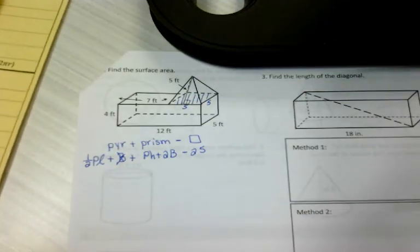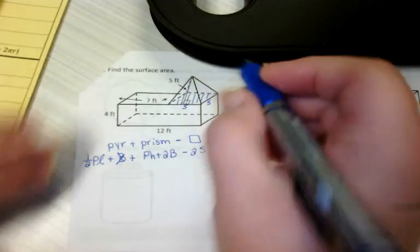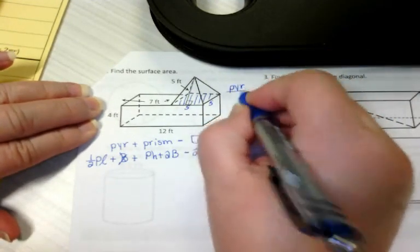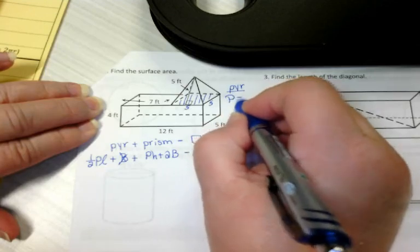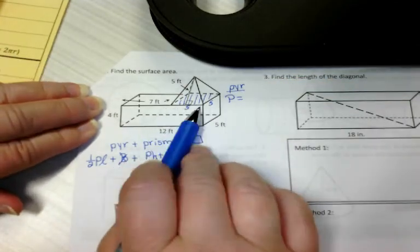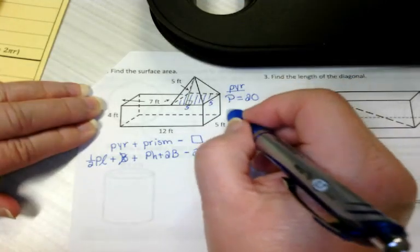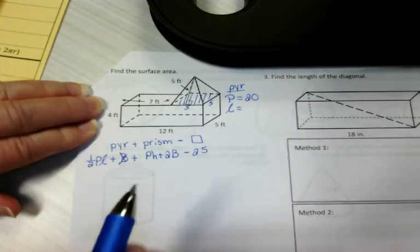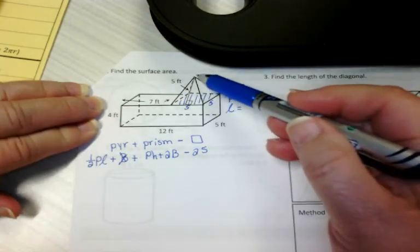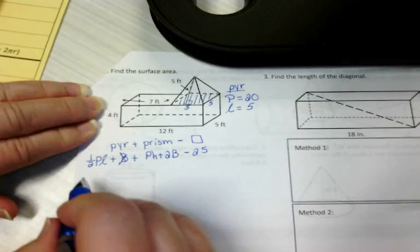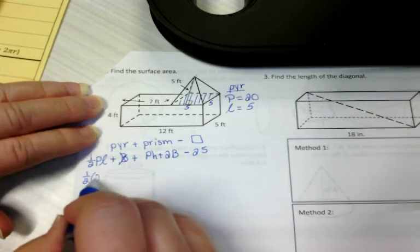All right, let's talk about the pyramid. What is the perimeter of the base? I'll make a list over here. Pyramid. What is the perimeter of the base? It's a square pyramid, 5 by 5. So that perimeter is 20. What is the slant height of the pyramid? I've got that labeled for you. That's a 5. So pyramid's done. 1/2, 20 times 5.